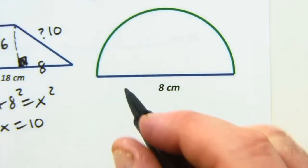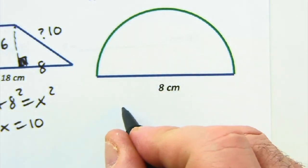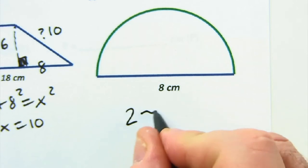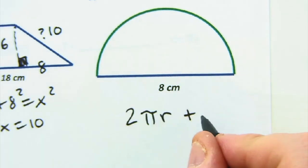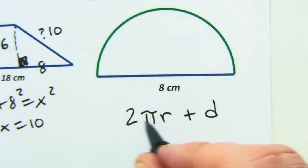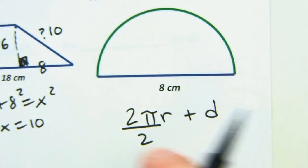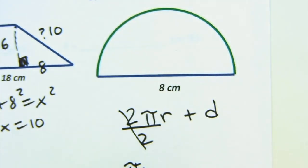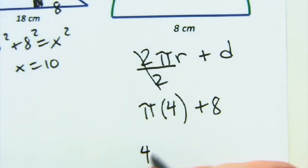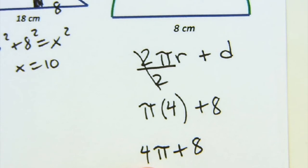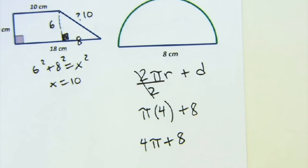I like this one because it's half of a circumference. The full circumference is 2πr, so half is just π times r. With a diameter of 8, the radius is 4, so the curved part is 4π. The straight part (the diameter) is 8. Your exact answer would be 4π + 8. You could convert to a decimal using your calculator — 4 times 3.14 plus 8 — but most of these ask for the exact answer to practice keeping pi in the answer.